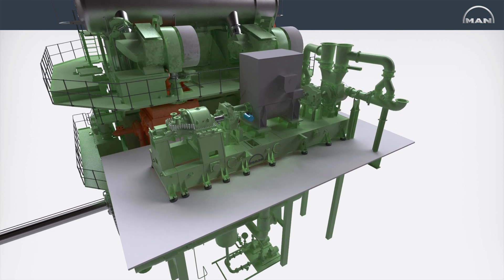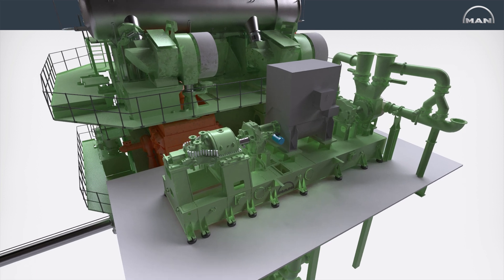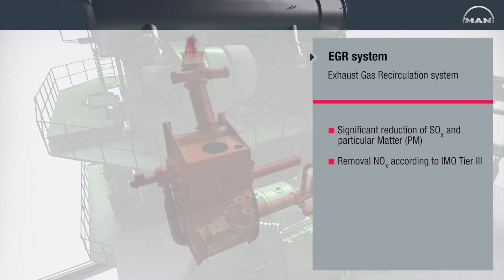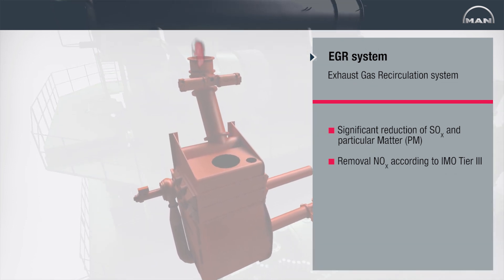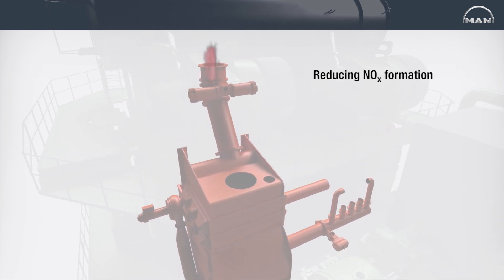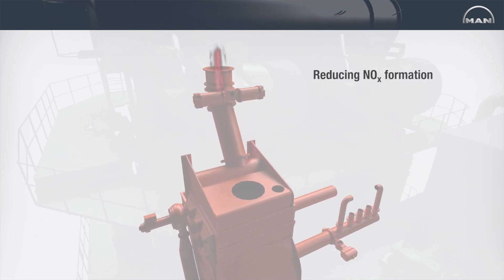The MAN Diesel and Turbo developed exhaust gas recirculation, or EGR system, is based on the principle of reintroducing a part of the exhaust gas back into the cylinder, thereby reducing NOx formation by lowering the peak temperature in the cylinder.